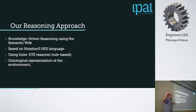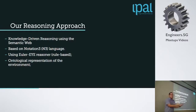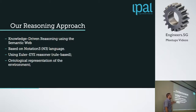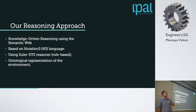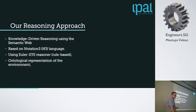We use N3 notation — it's a notation for semantic web. For inference, to identify activities of the user, we use EYE Reasoner — it's a rule-based reasoner. We also have an ontological representation of the environment, so we have a knowledge representation of the house and of the user.